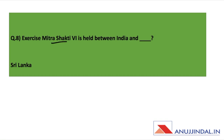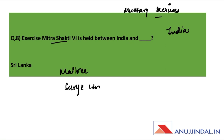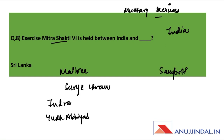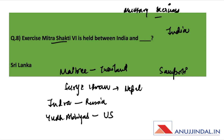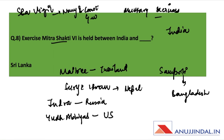Exercise Mitra Shakti 6 is held between India and which country? It is very important to remember military exercises between India and other countries. Key exercises include: Maitri (India–Thailand), Surya Kiran (India–Nepal), Indra (India–Russia), Yudh Abhyas (India–US), and Sampriti (India–Bangladesh). There was also Sea Vigil — the first and largest coastal defence exercise conducted between the Navy and Coast Guard. Questions on these exercises can come in upcoming examinations.